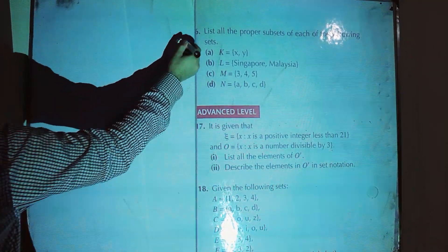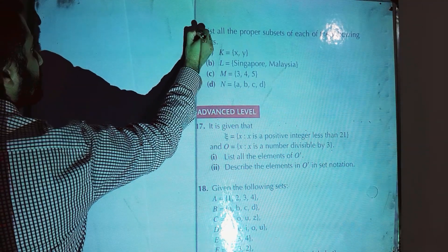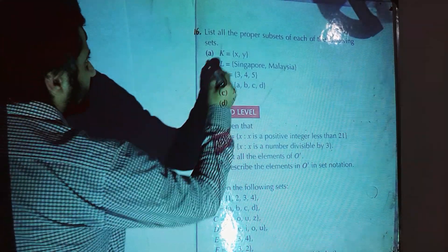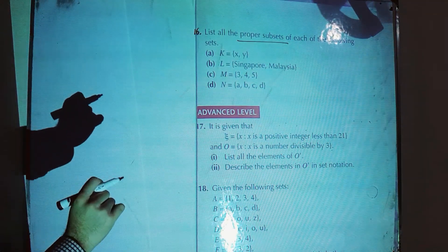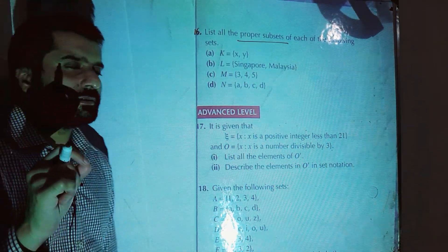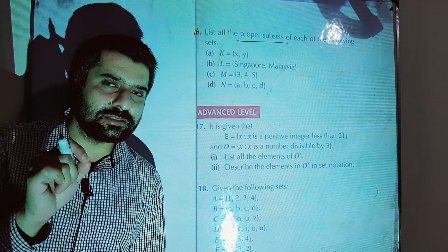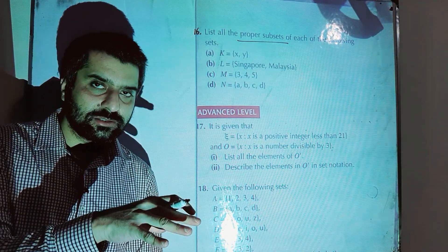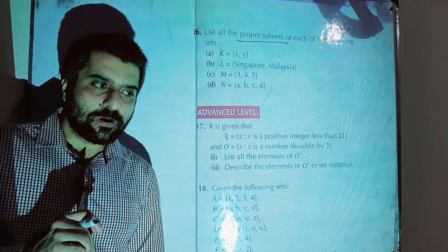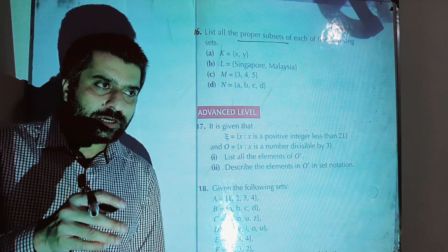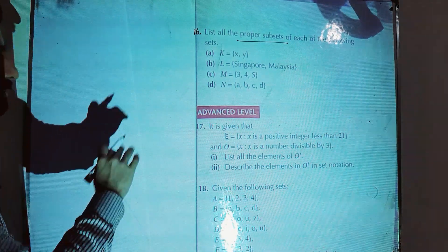Question number 16: list all the proper subsets of each of the following sets. We have to write proper subsets now. The proper subset has the characteristic that it has all the elements of its superset — however, there must be at least one element in the superset that is not in the proper subset.